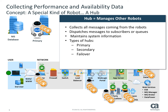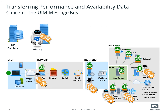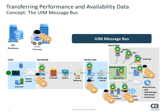Tunnel hubs use VPN-like connections to communicate through firewalls. A relay hub is installed in an IT mass deployment and communicates with the UIM service. So how is data passed to the primary hub? It takes a bus — the UIM message bus. The message bus provides a set of services to the hubs, robots, database, and management consoles. The message flow on the bus is managed using routing and naming schemes.